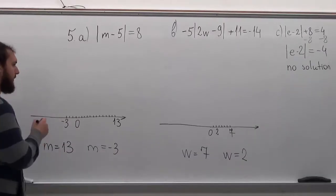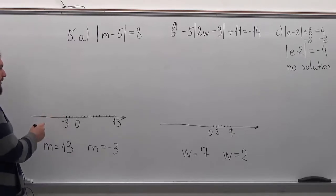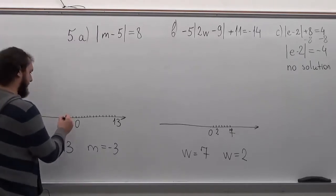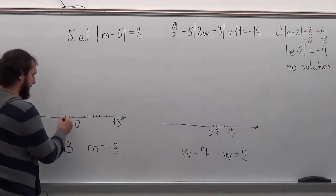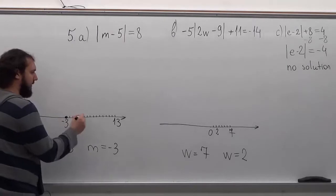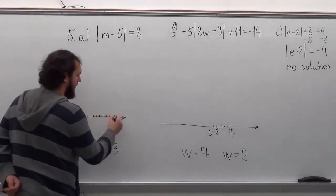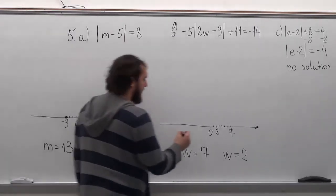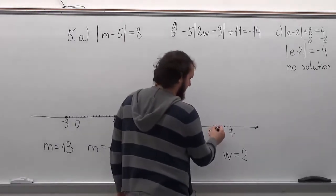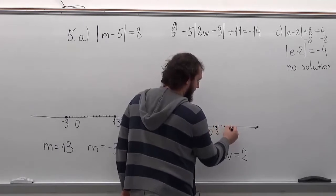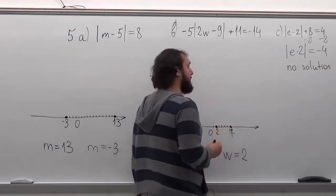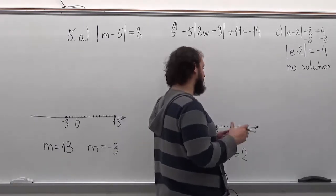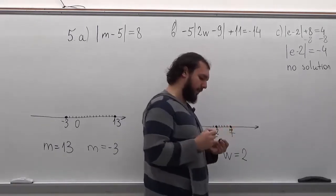So we finished the number lines. Now we're just going to put the dots where the answers are. And since the last problem doesn't have a solution, we don't need to draw a line.